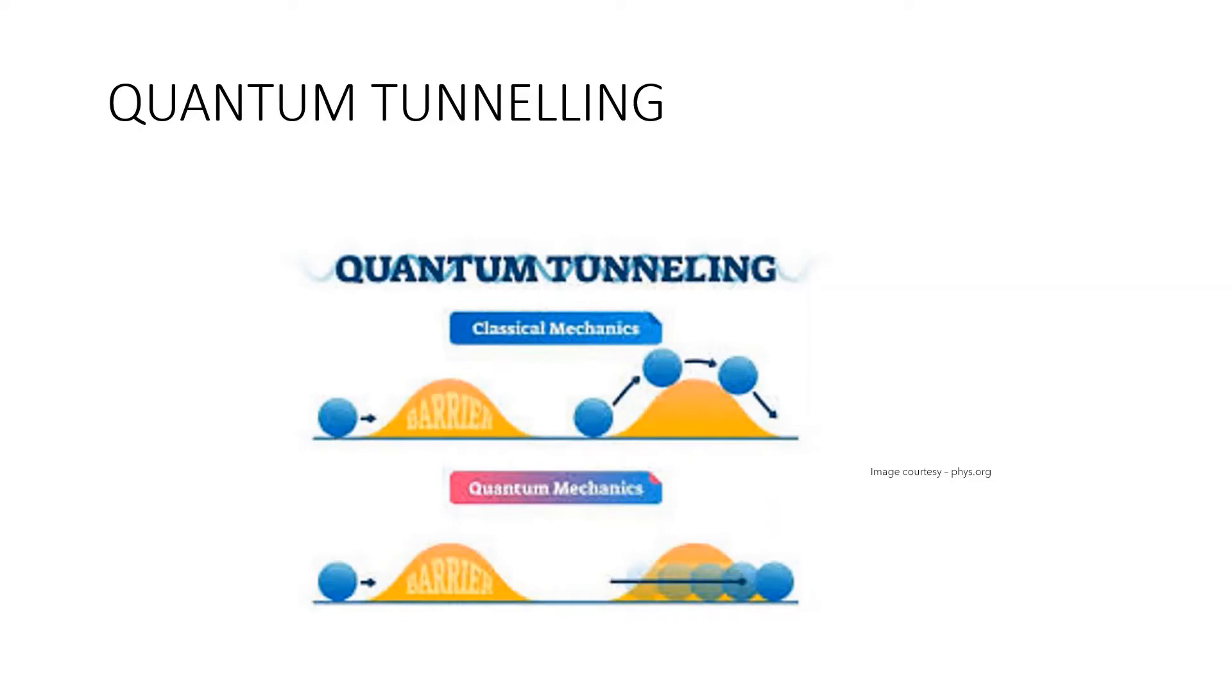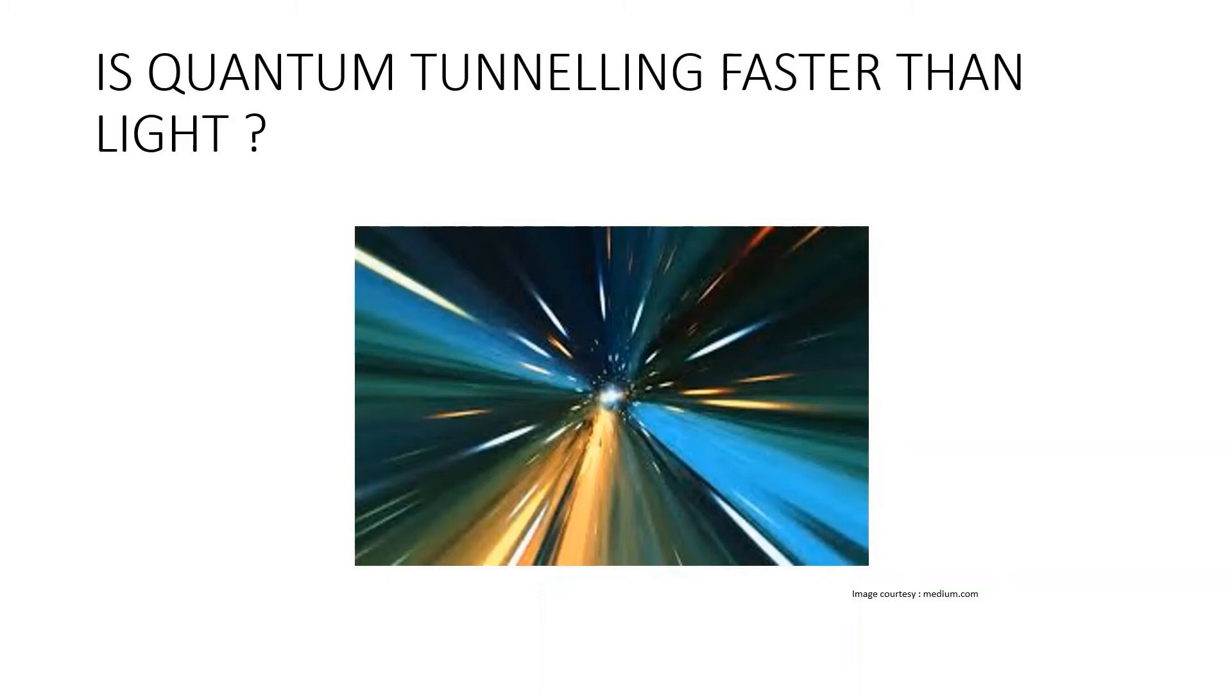Some physicists have claimed that it is possible for spin zero particles to travel faster than the speed of light when tunneling. This apparently violates the principle of causality since there will be a frame of reference in which it arrives before it has left. In 1998, Francis E. Lowe reviewed briefly the phenomenon of zero-time tunneling. More recently, experimental tunneling time data of photons and electrons have been published by Gunther Nimms.